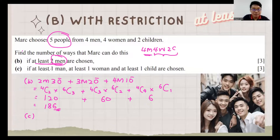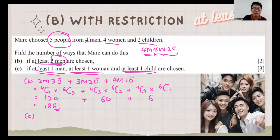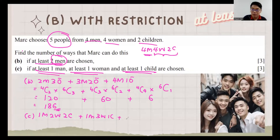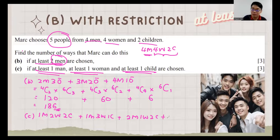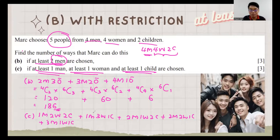Part C: at least one man, at least one woman, and at least one child. We list all valid combinations: 1 man + 2 women + 2 children; 1 man + 3 women + 1 child; 2 men + 1 woman + 2 children; 2 men + 2 women + 1 child; 3 men + 1 woman + 1 child. Counting all five situations gives an answer of 184.